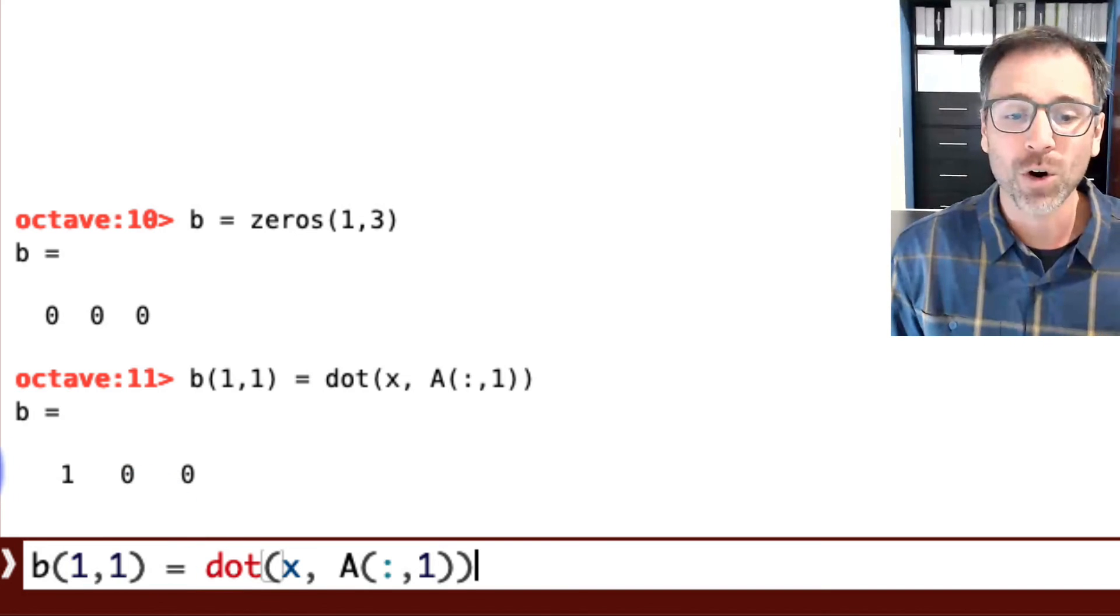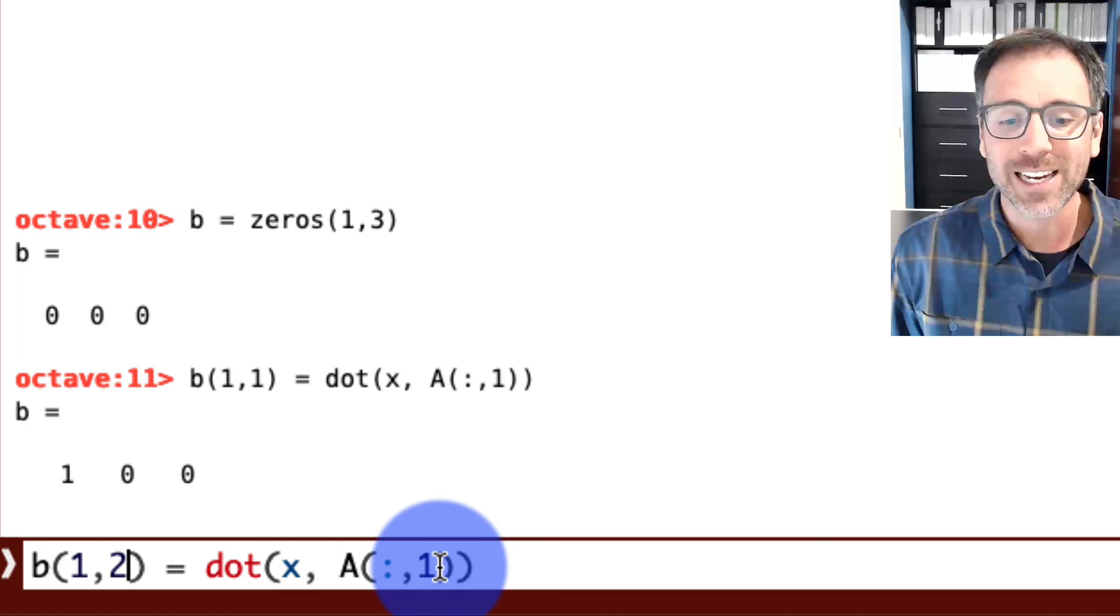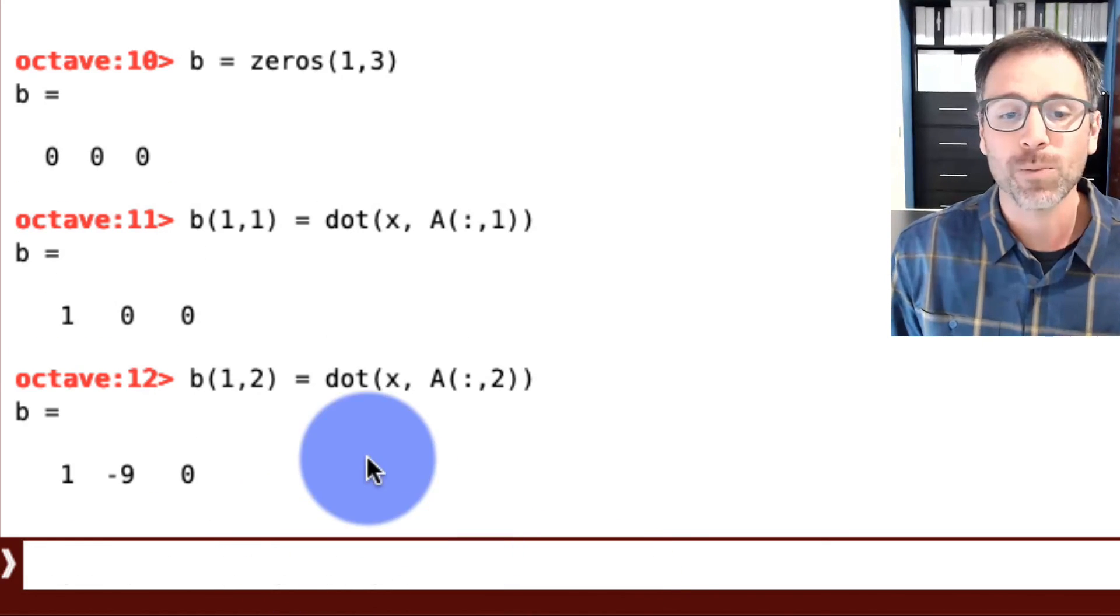Now if I push the up arrow, it will give me the last command that I ran. So let's go over to the second entry of b, which is going to be a dot product between the vector x and the second column of A. And we push enter. Now that overrides the zero with the output negative 9, which is what I expected.